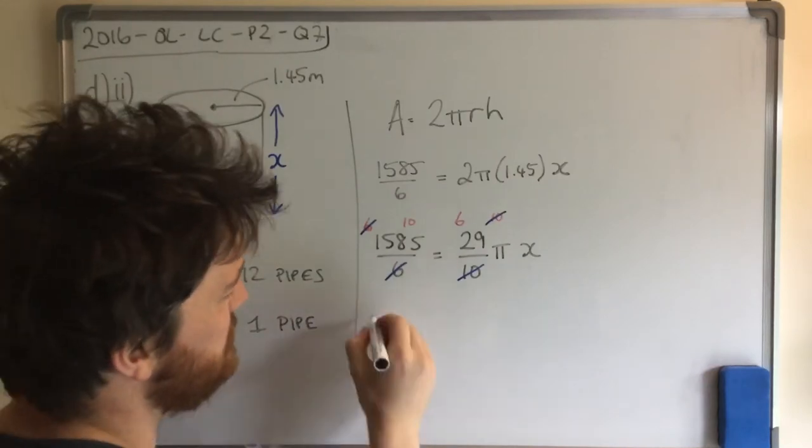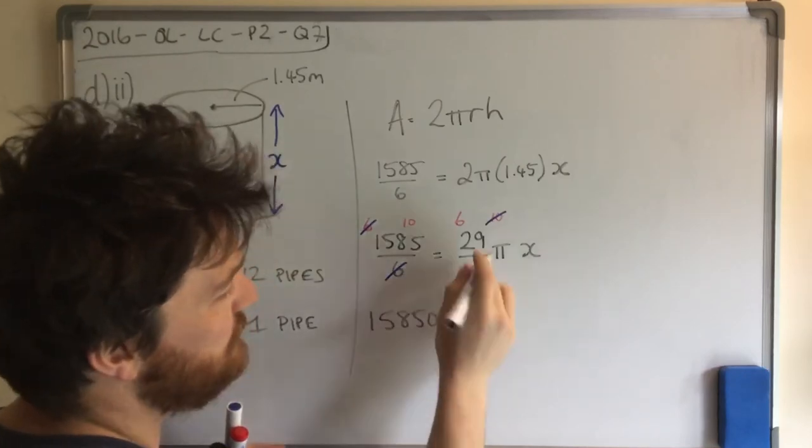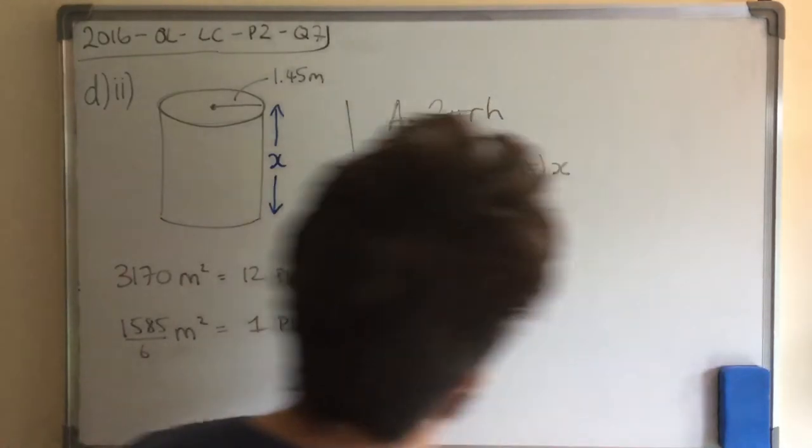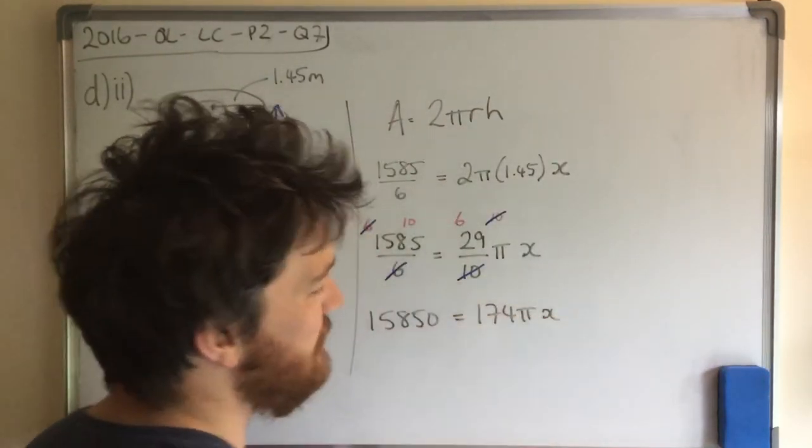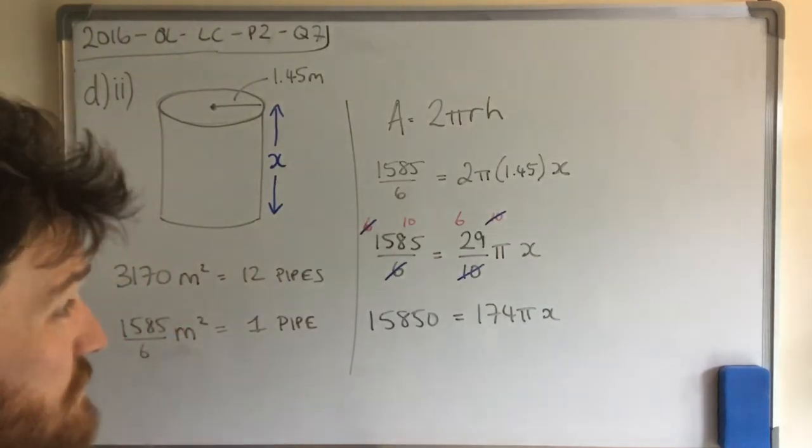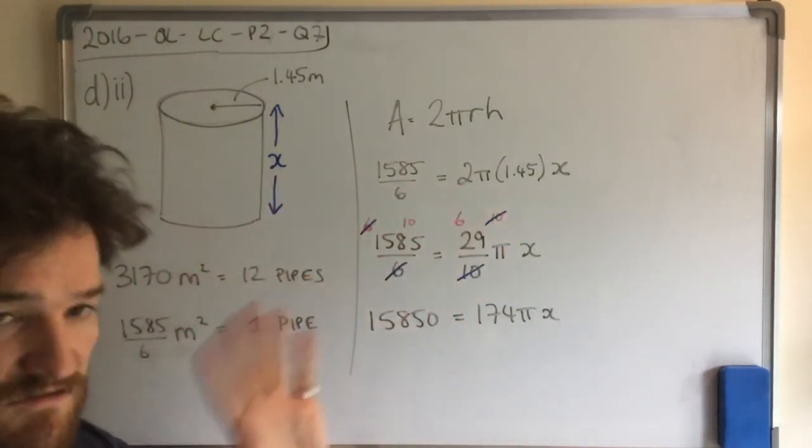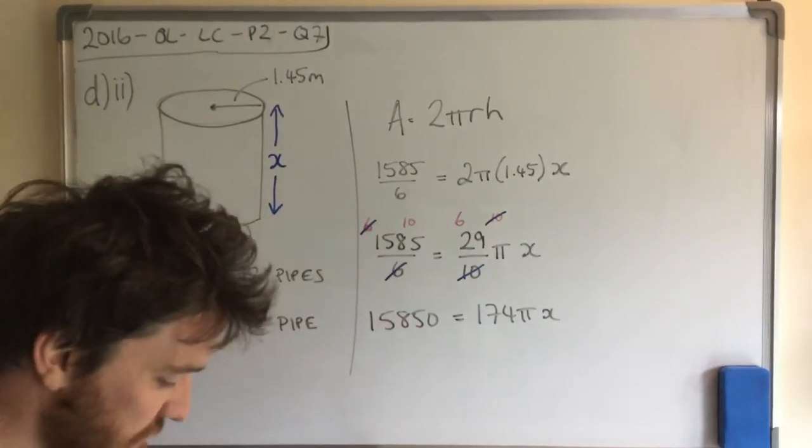I'm going to multiply this side by 10. So you can do that in your calculator or you might just say it's 15850. I'm going to multiply 29 by 6, or that side by 6, and I get 174πx. Now, look, some of you might just go straight in the calculator and know exactly what to do from that last step. Fine. Or even from here. Fine. I'm not worried about that. I'm more explaining this in slow motion for those that are struggling.